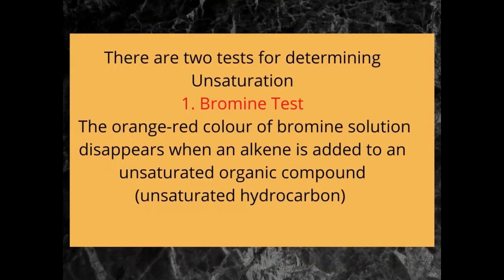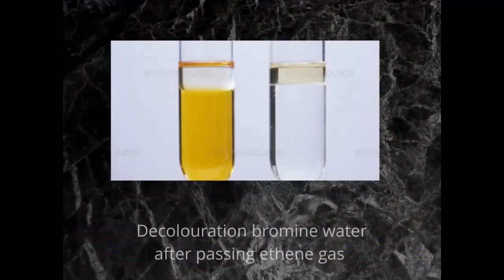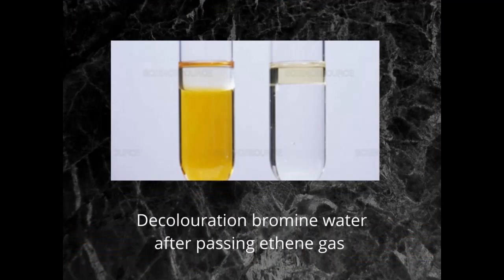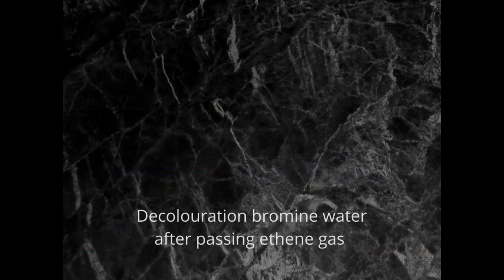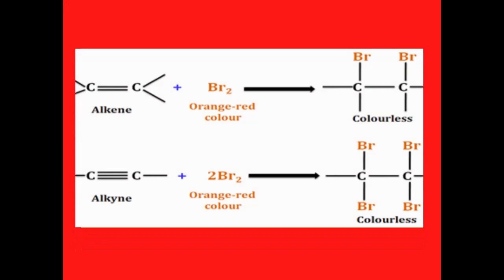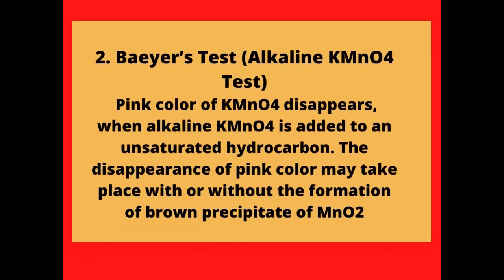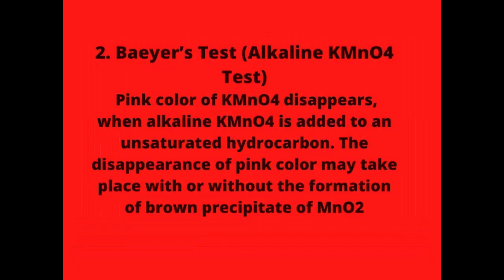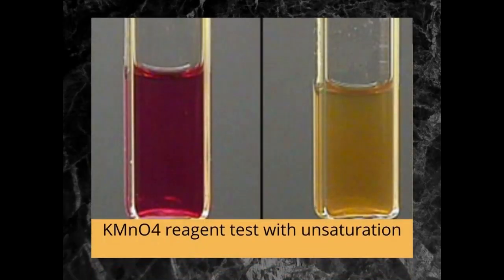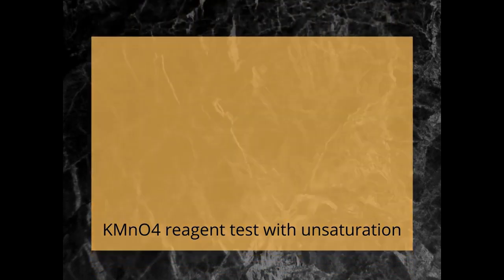Unsaturation in organic compounds can be tested using the bromine water test and Bayer's reagent test. In the bromine water test, when an alkene is passed into bromine water, the red color of bromine water becomes colorless. In Bayer's reagent test, when alkaline potassium permanganate solution is treated with an unsaturated hydrocarbon, it becomes colorless — the potassium permanganate changes to colorless.